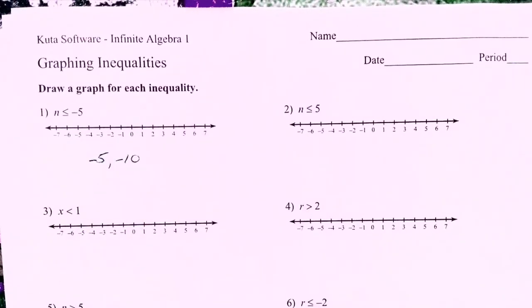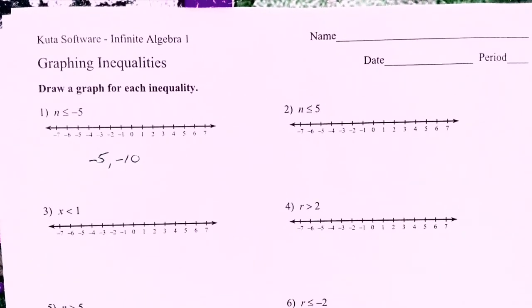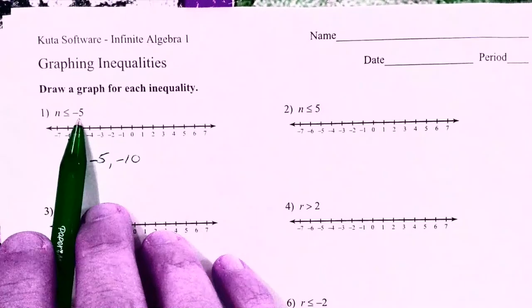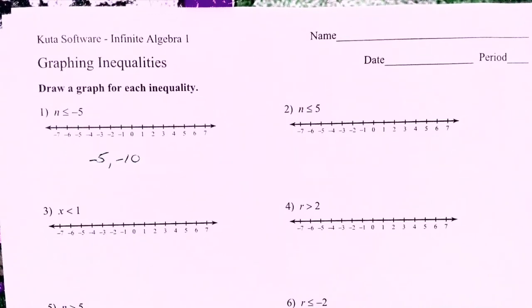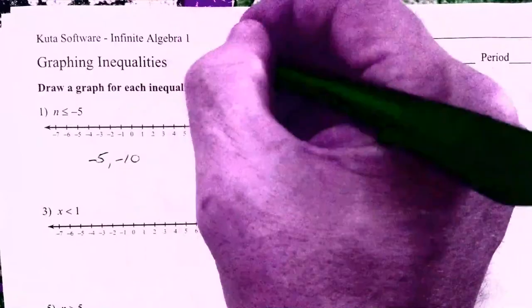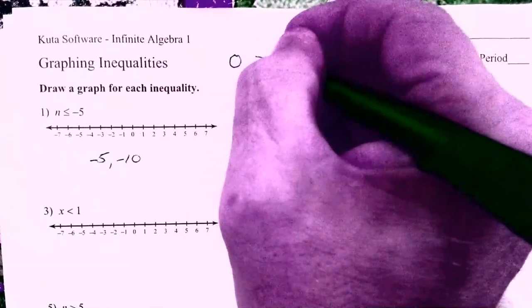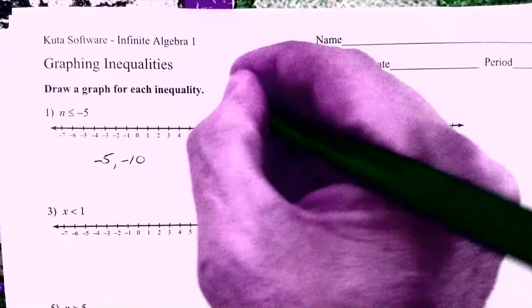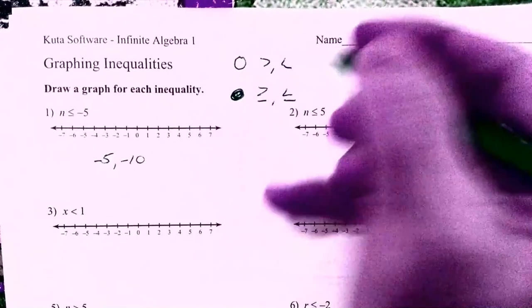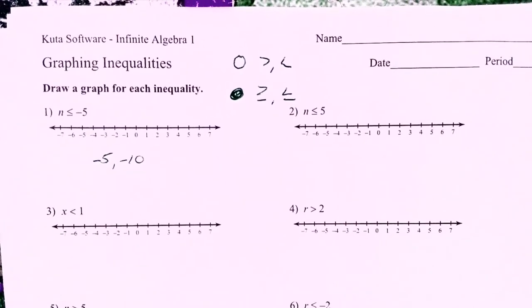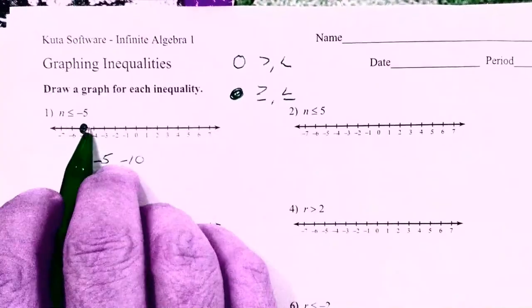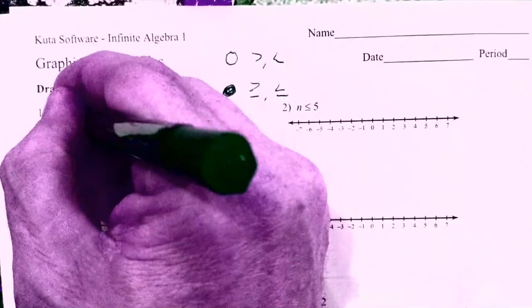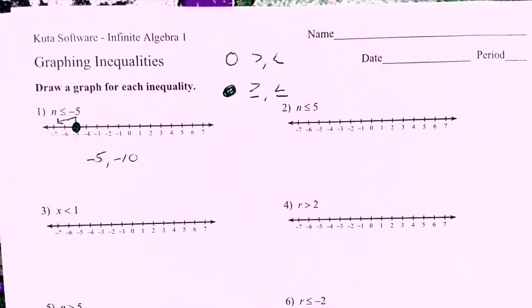To graph an inequality, there are basically three steps. Step one: go to the number — go to negative five. Step two: decide if it's a solid dot or a hollow dot. Here's your guide: if it's just greater than or less than, it's a hollow dot. If it's greater than or equal to or less than or equal to, it's a solid dot. So here I put a solid dot on negative five because it can include negative five. Step three: go up and to the left for all numbers less than negative five. That is graphing an inequality.